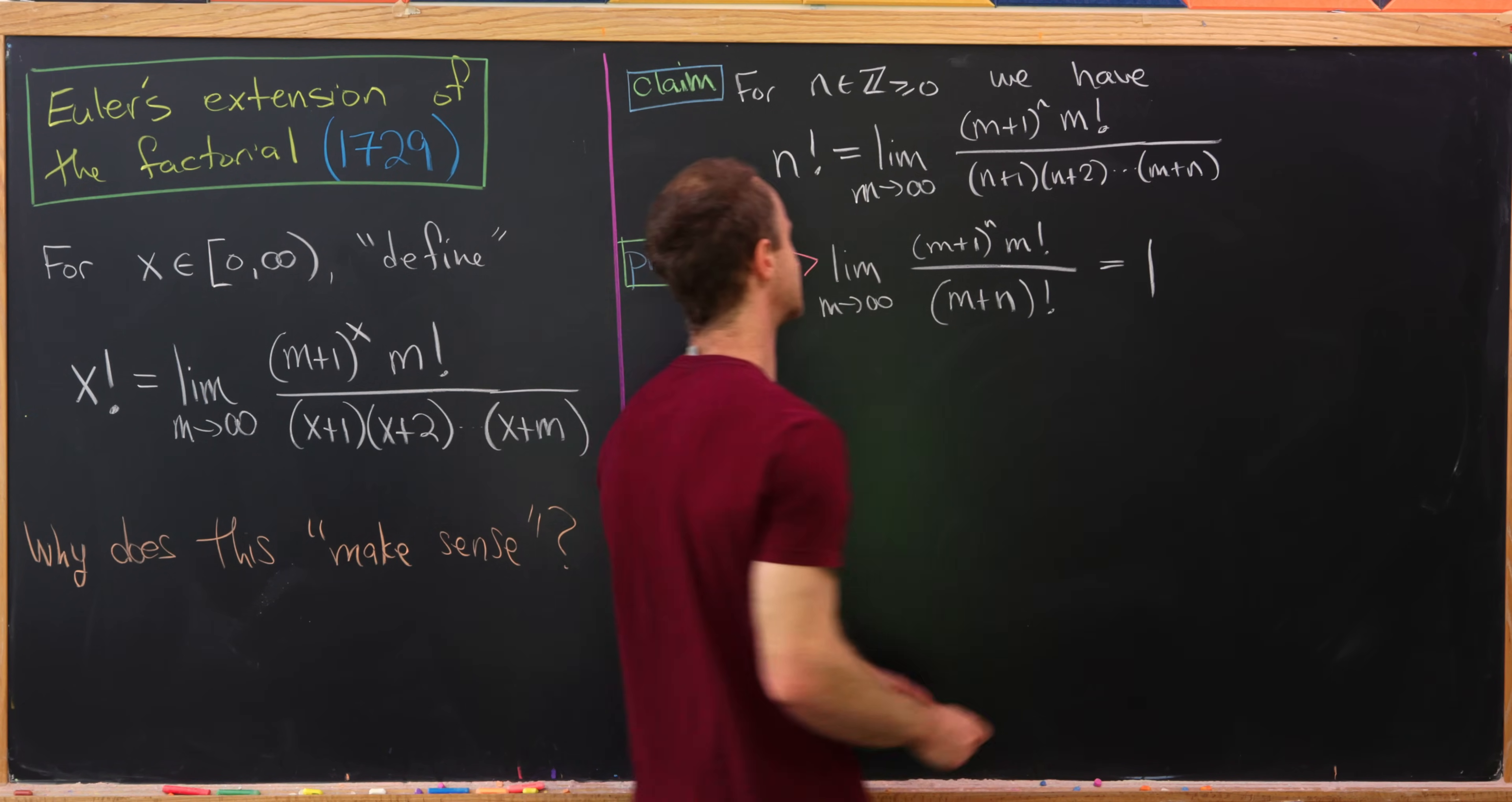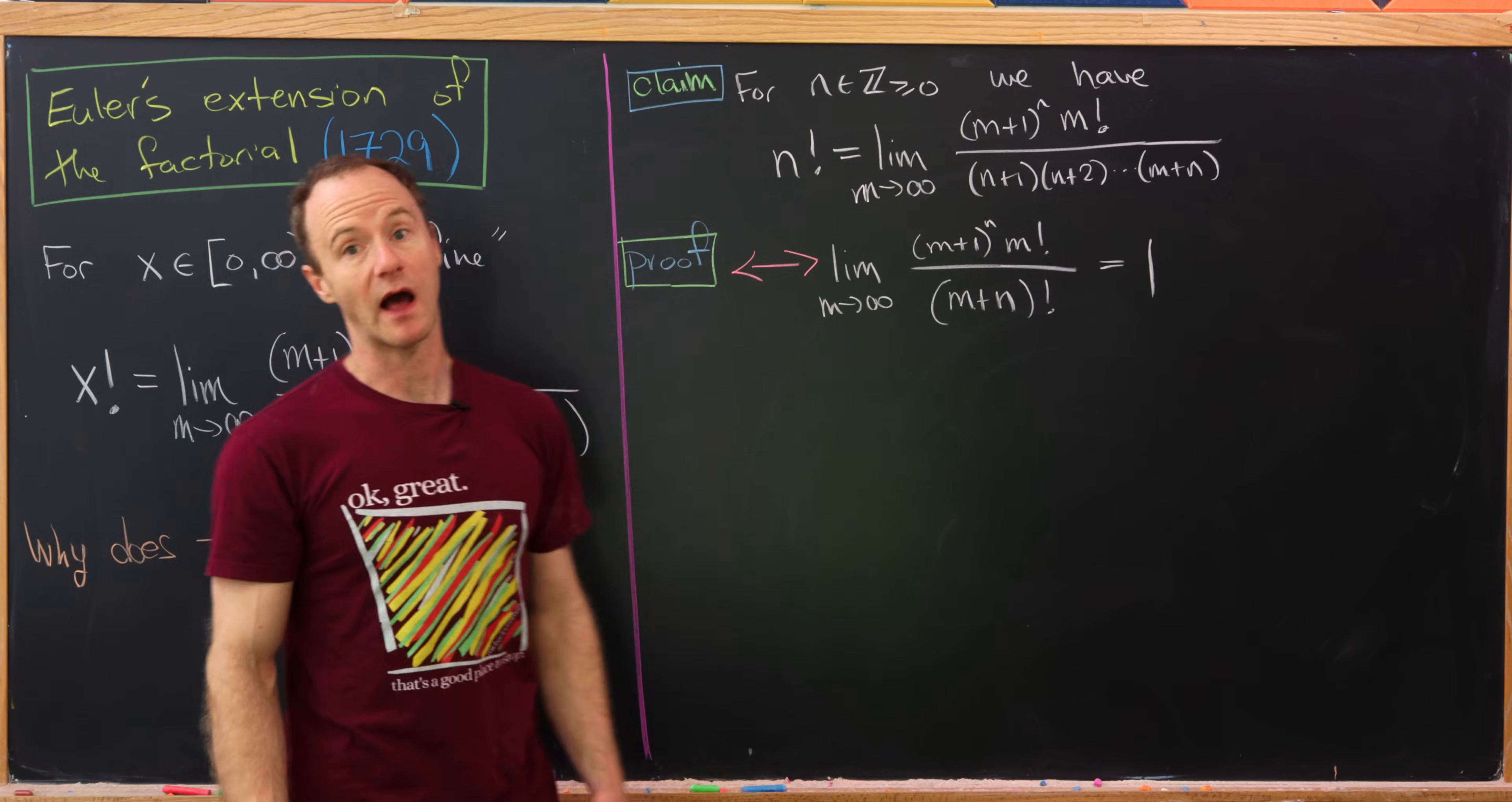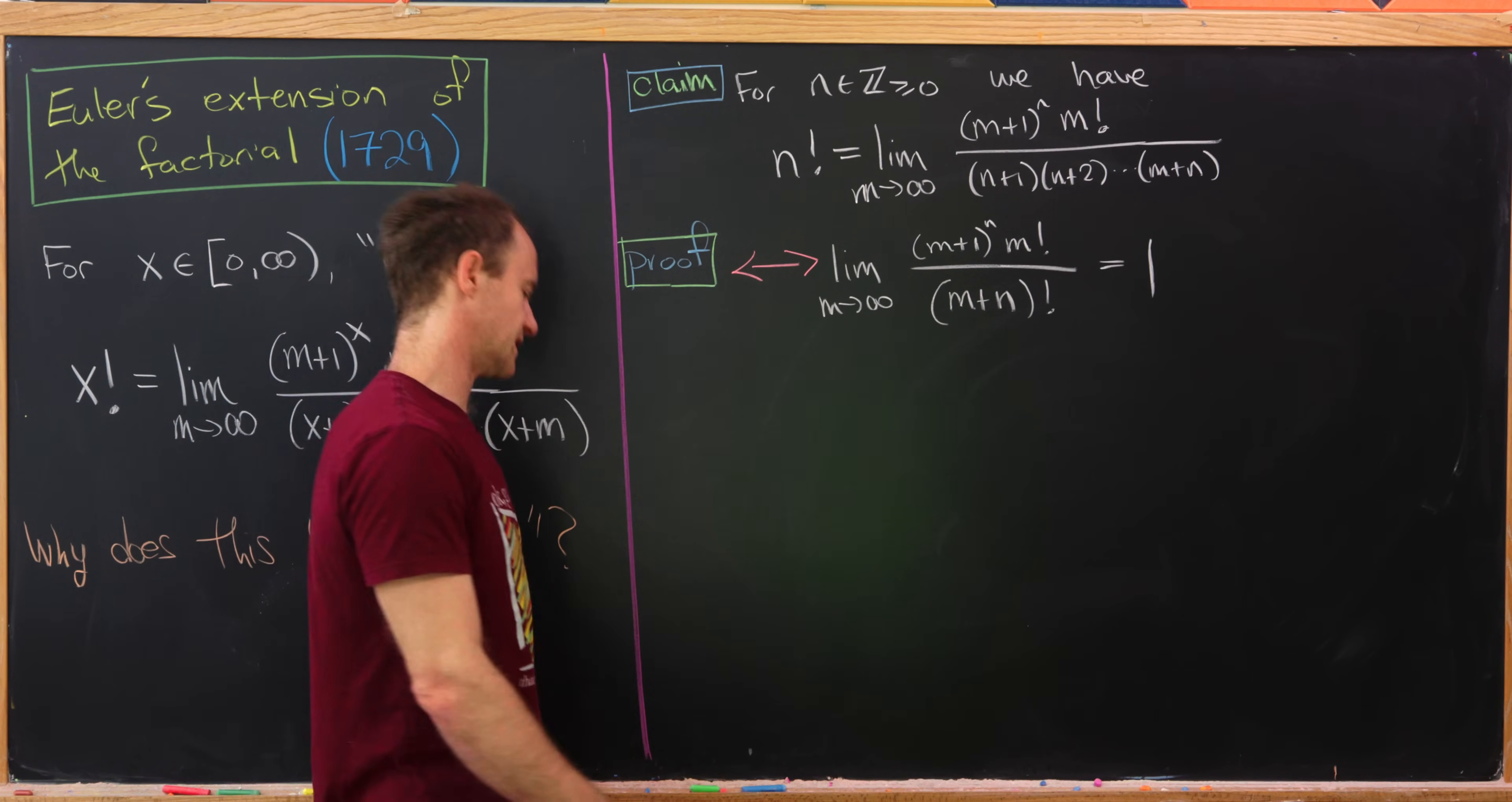And well since we're dividing by n factorial then we should get one because that's maybe turning this left hand side into one. Okay, so notice that this kind of limit doesn't really make sense until this extension is defined if n is not a non-negative integer, because then we would have a non-negative integer factorial right here. Okay, so let's see how we might do this.